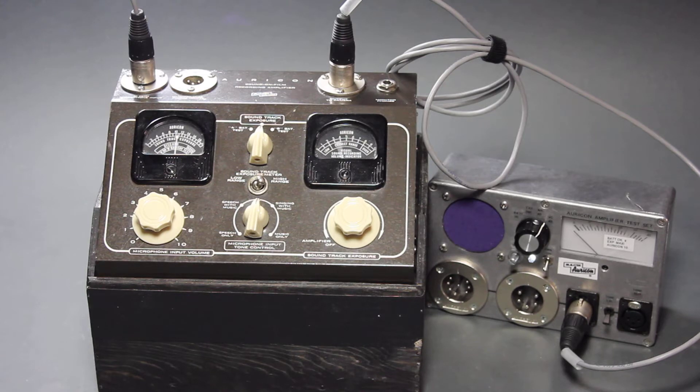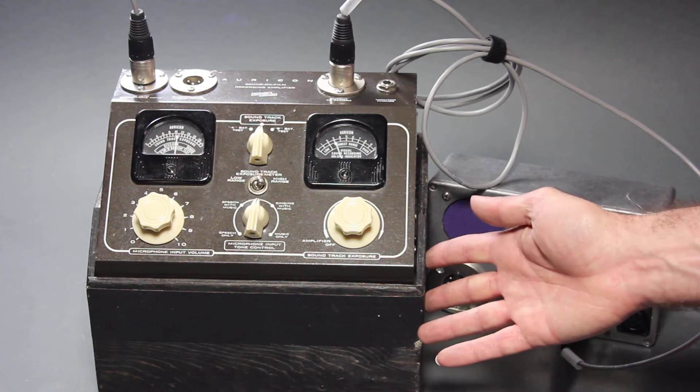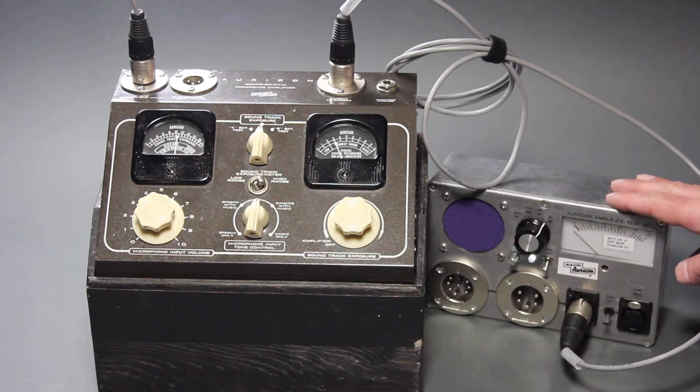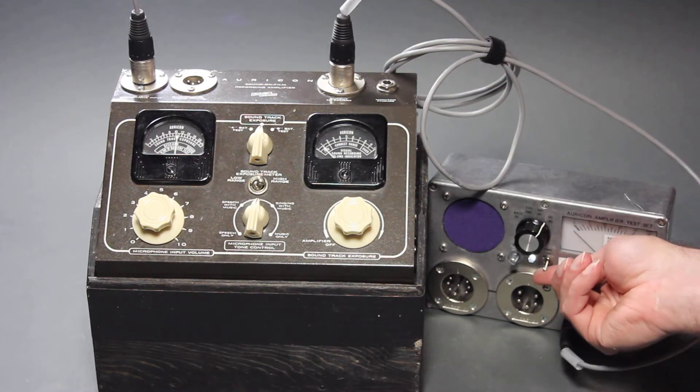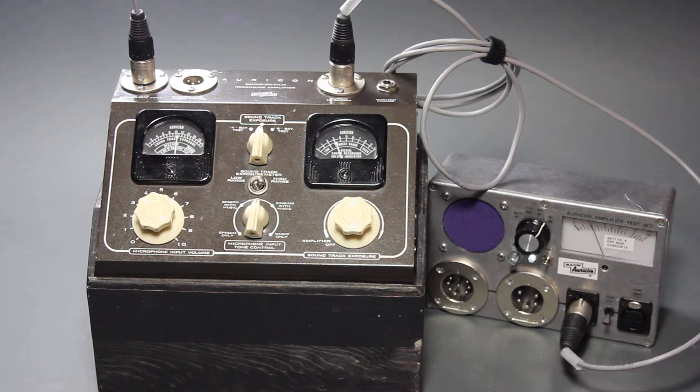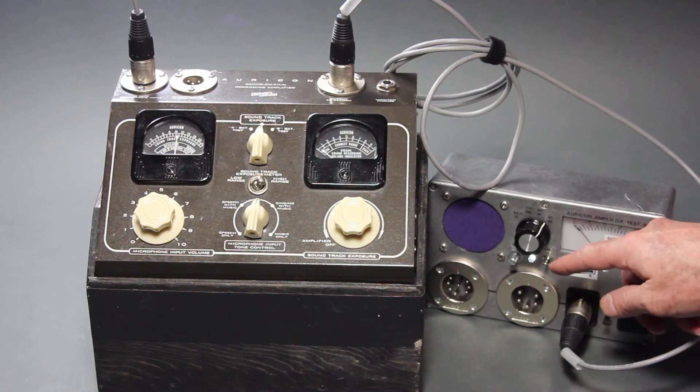This particular amplifier is shown today in its trade dress with its original battery box. I have it connected here with a custom test jig, which allows me to measure and see the audio and other signals going to the galvo. We have a mic level signal coming into the amplifier so we can hear some sound. A little music from the radio.